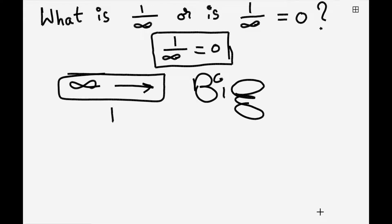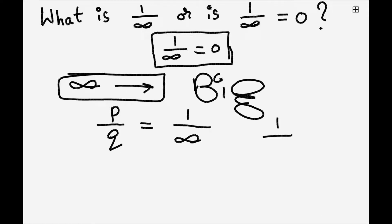If you replace infinity with, let's say, the number three, that gives us one by three, which equals zero point three three three three. And if you multiply zero point three three by the same number three, you get one.